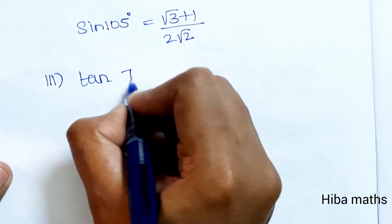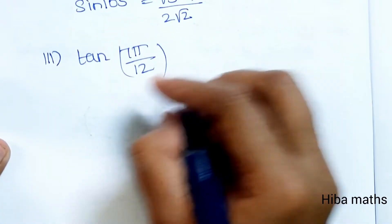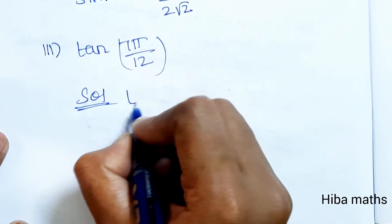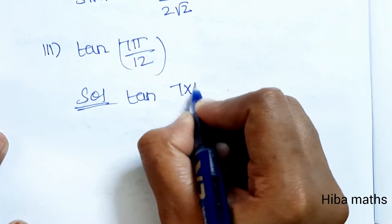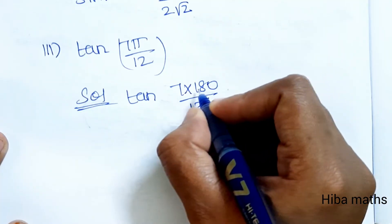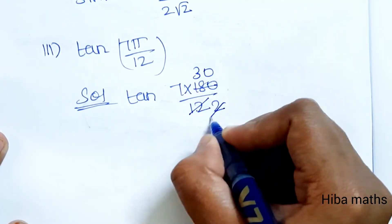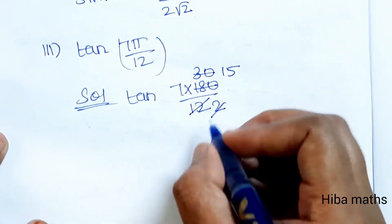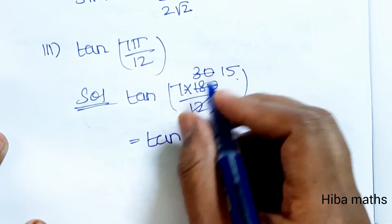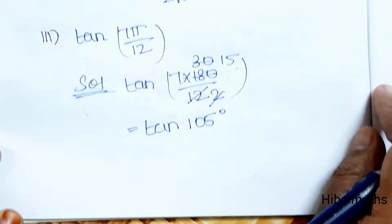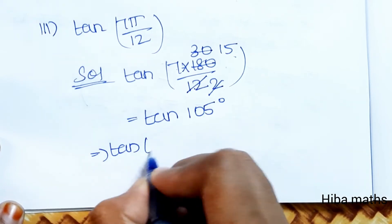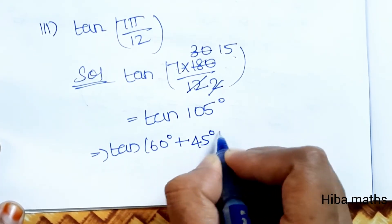Now for tan 7π/12. Since it is in radians, we convert to degrees: 7π/12 radians = 105 degrees. So tan 7π/12 = tan 105 degree = tan(60 + 45) degree.